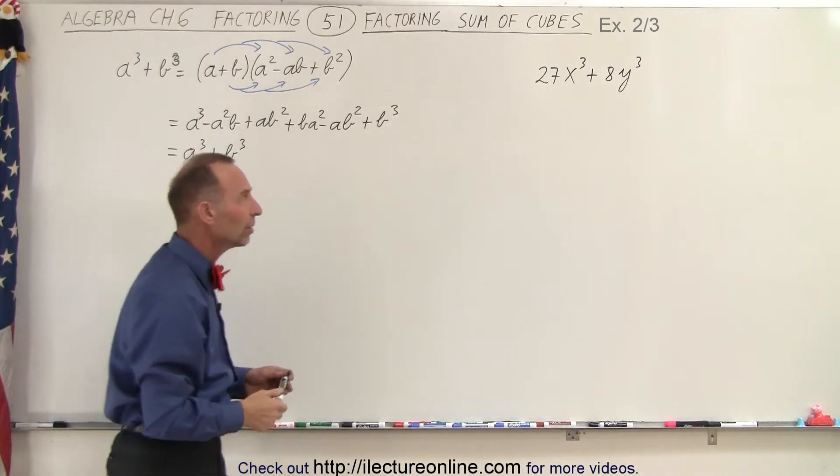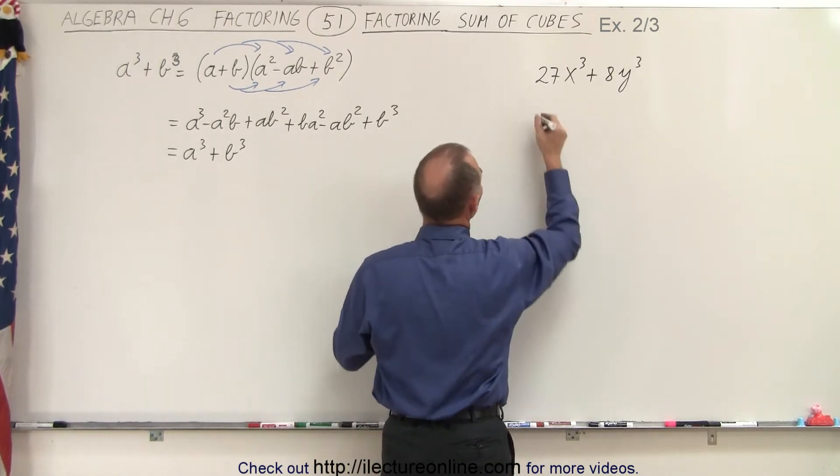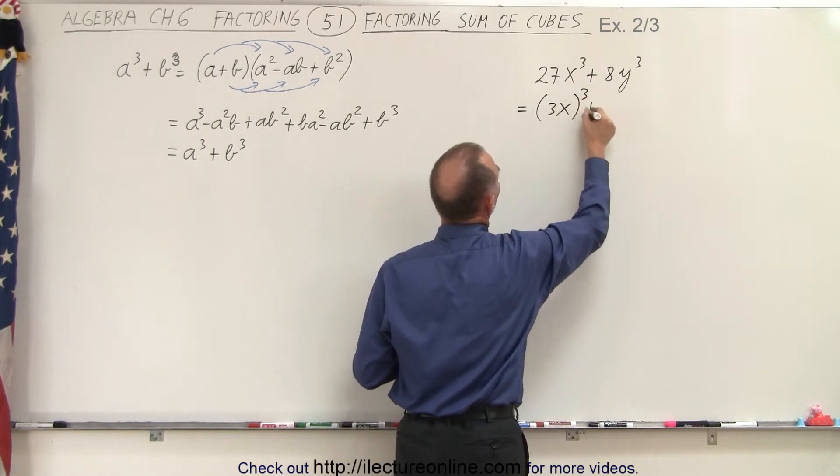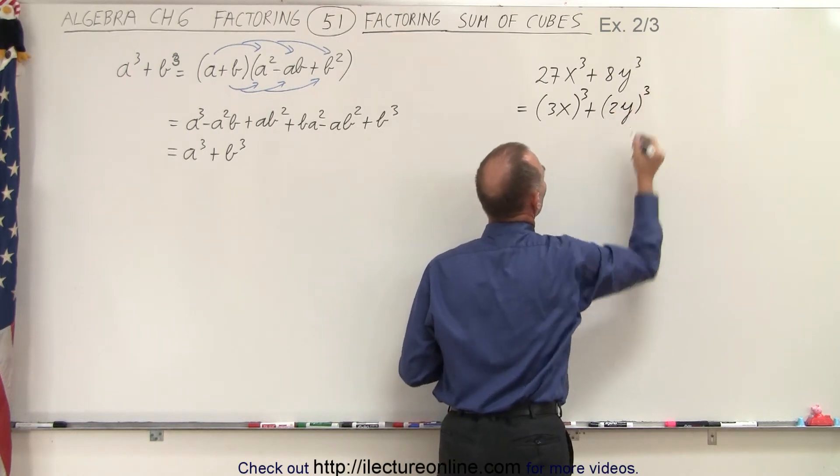So we're going to rewrite it slightly as this. 27 can be written as 3 cubed, so this can be written as the quantity 3x cubed plus 8 is 2 cubed, so this can be written as 2y quantity cubed.